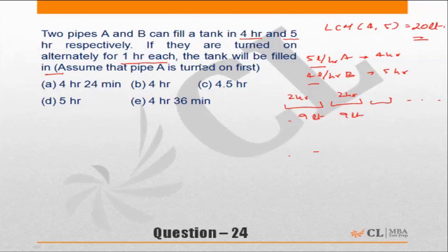Now these 2 liters will be filled in by A, because originally we are starting with A. So it will be A, B, A, B, and then A will come. A does 5 liters per hour.